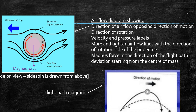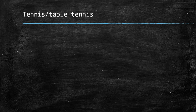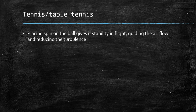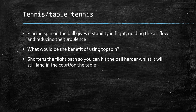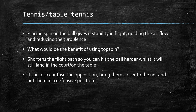In a flight path diagram, the normal parabolic flight path is shown alongside what happens when the Magnus effect applies: the direction of motion with top spin causes the projectile to dip suddenly, giving a non-parabolic flight. Remember, the Magnus force is always shown from the centre of mass of the projectile. Applying this to tennis and table tennis: placing spin on the ball gives it stability in flight, guides the airflow, and reduces turbulence. The benefit of top spin is that it shortens the flight path — you can hit the ball much harder whilst it still lands in the court or on the table, and it can confuse the opposition, drawing them closer to the net.